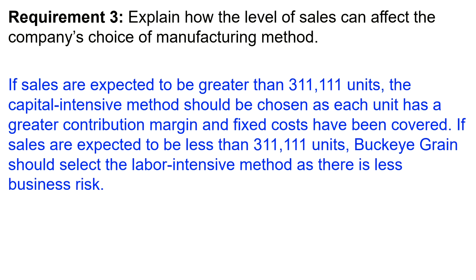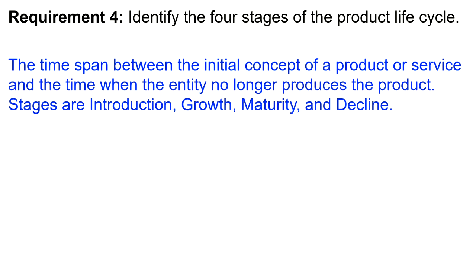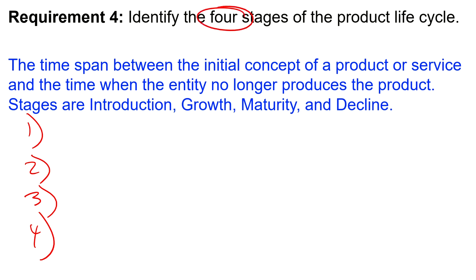Requirement four: identify the four stages of the product life cycle. The product life cycle covers the time span between the initial concept of a product and when the entity no longer produces it. The four stages are: (1) Introduction, (2) Growth, (3) Maturity, and (4) Decline. The question just says identify, so listing them clearly and numbered is sufficient to earn full marks.